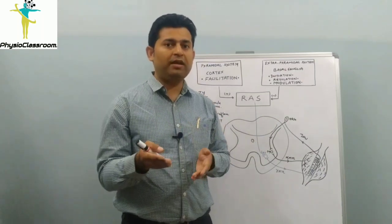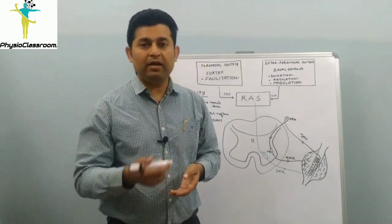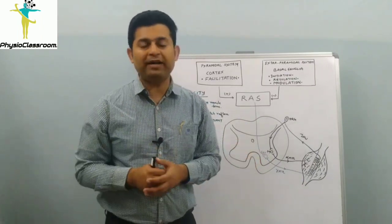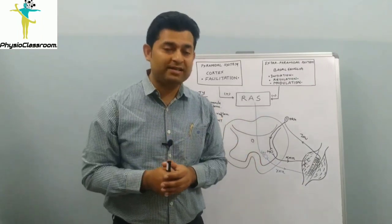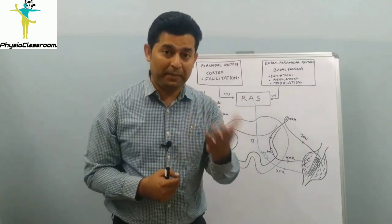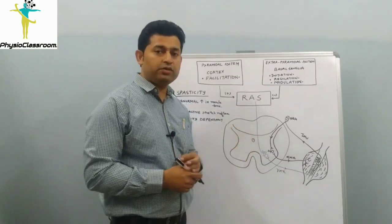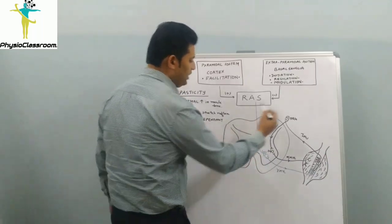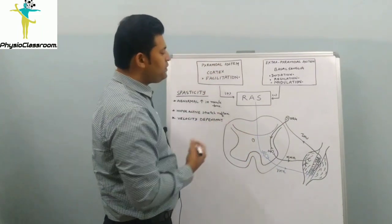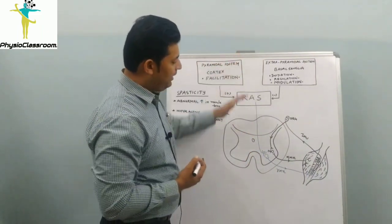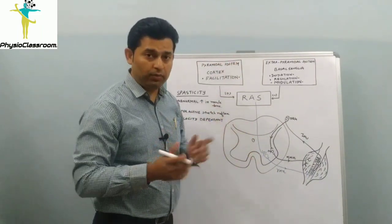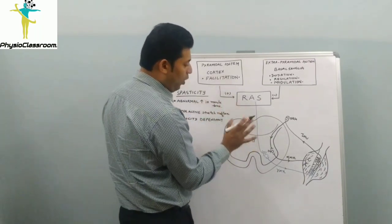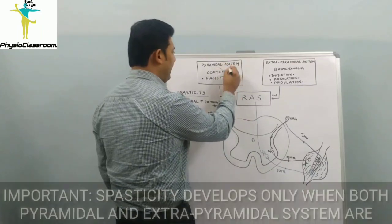We will be decoding all three varieties of upper motor neuron lesions in this and upcoming videos. Now let's quickly understand the neurophysiology of spasticity development, which will make it very clear why there is a hyperactive stretch reflex and most importantly why spasticity is considered to be velocity dependent.